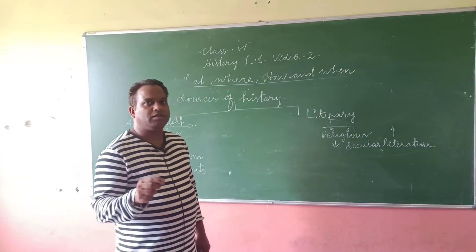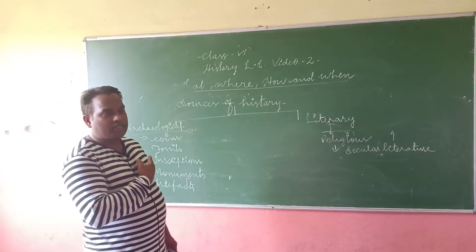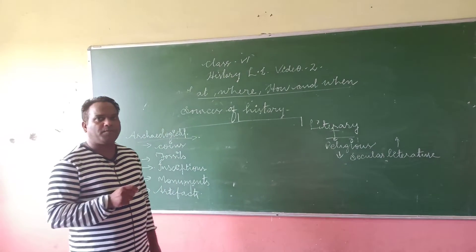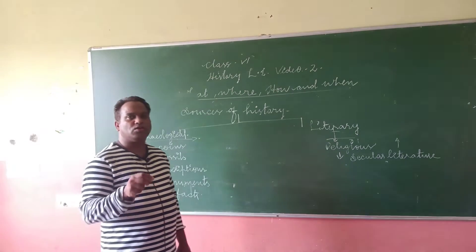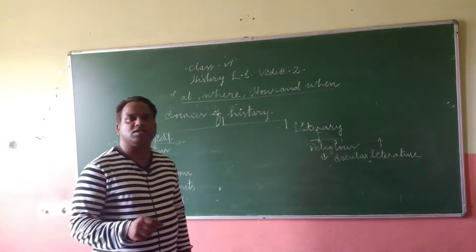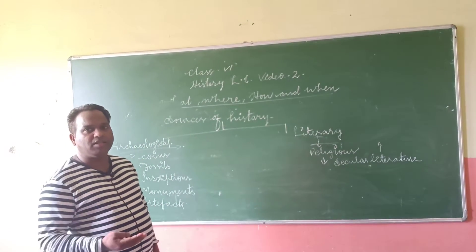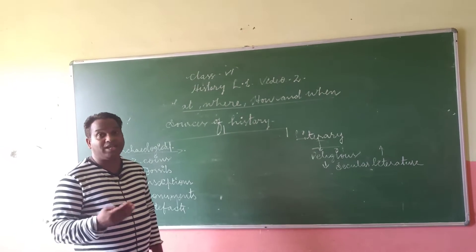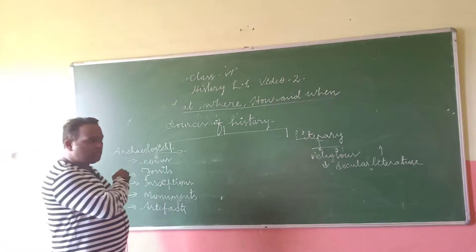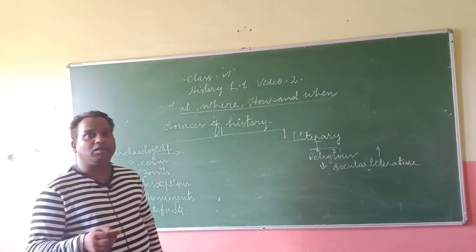There are two types of sources of history: archaeological and literary. Archaeological sources are the main source of direct evidence. Archaeological sources are direct evidence as well as physical evidence, because they cannot be changed or altered.